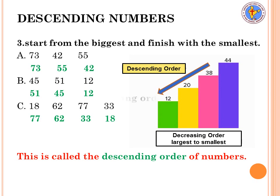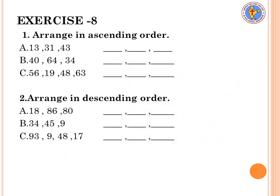Now here is the exercise. Question one: arrange in ascending order — write from the smallest number to the biggest number. Question two: arrange in descending order — write from the biggest number to the smallest number.